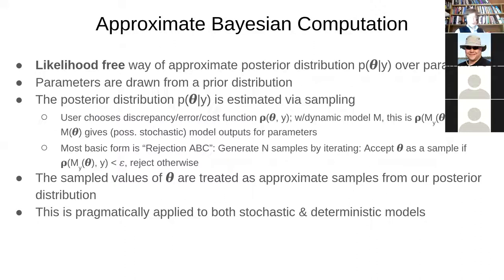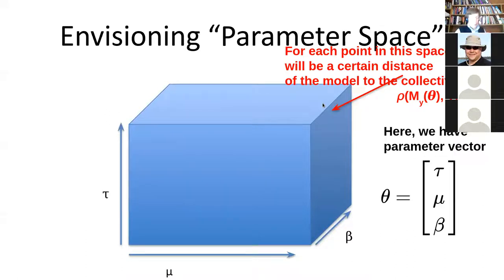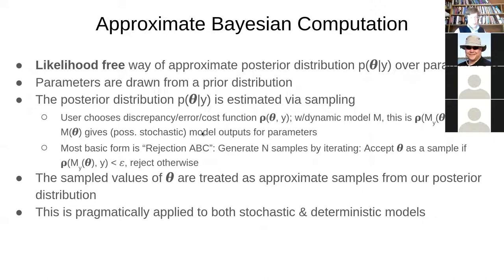What is approximate Bayesian computation? It's a likelihood-free way of approximating the posterior distribution. We don't have to specify likelihood functions. We draw parameters from a prior distribution that we specify based on our subjective likelihood. We draw from the posterior distribution via sampling — drawing values with probability given by the posterior distribution. There are several versions of this, but the key point is we have a discrepancy function between what we see for a given value of θ from the model results and what we see in the observed data.